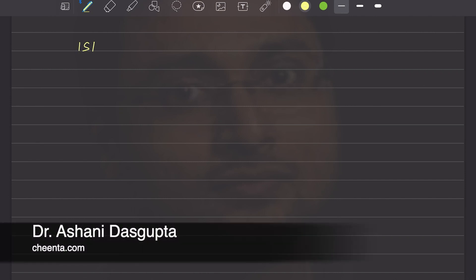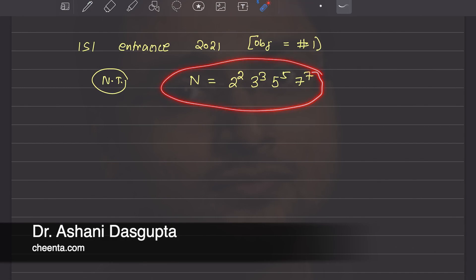This problem is from ISI Entrance 2021, objective problem number 1. It's a number theory problem and it's quite simple actually. We have a number n that's given as 2 square, 3 cube, 5 raised to the power 5, 7 raised to the power 7. So this is a prime factorization of n.